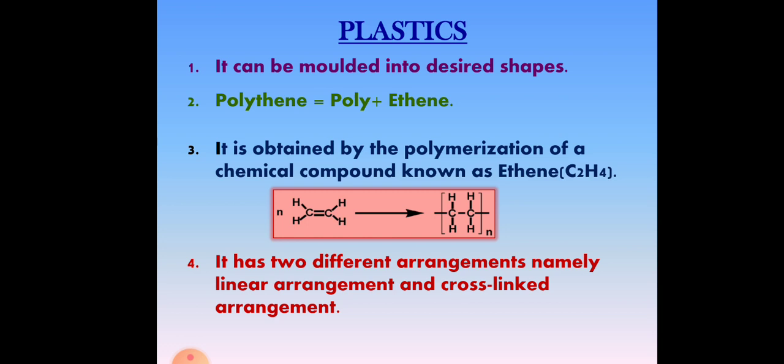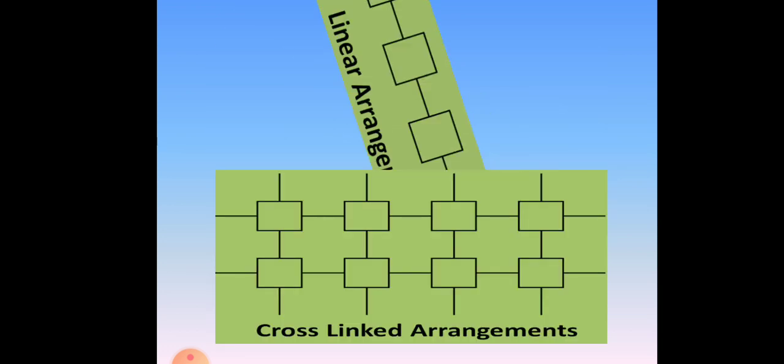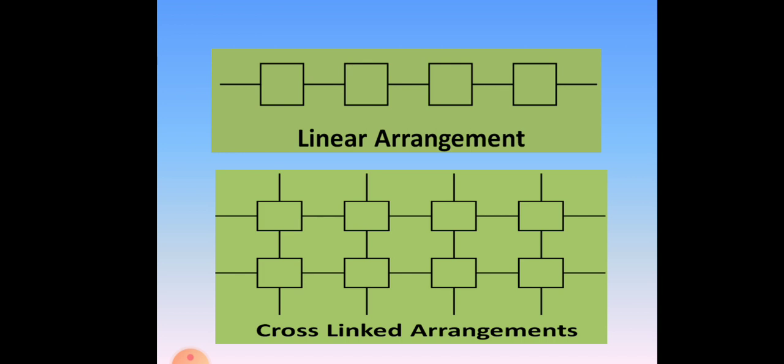Plastics can be molded into desired shapes. Poly plus ethene is called polythene. It is obtained by the polymerization of a chemical compound known as ethene (C₂H₄). Ethene has two different structural arrangements: a linear arrangement and a cross-linked arrangement.